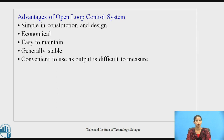The advantages of open-loop control systems: they are simple in construction and design. They are economical because there is no feedback element present. They are stable because as the input is given to the system, we get the output — there is no external disturbance taken into account and no feedback element to continuously change the input. They are also convenient to use when the output is difficult to measure.